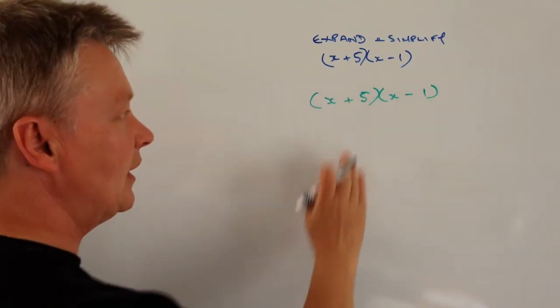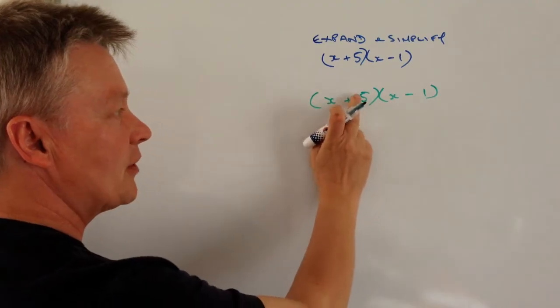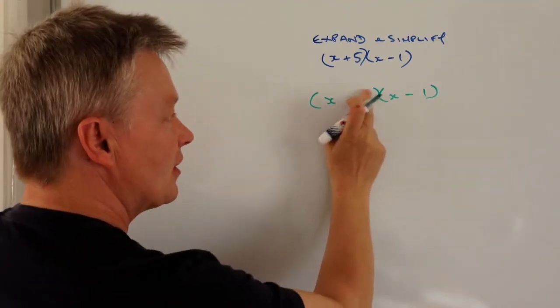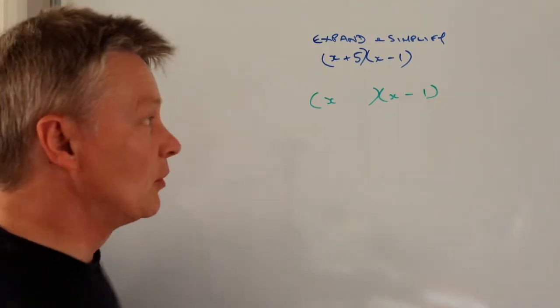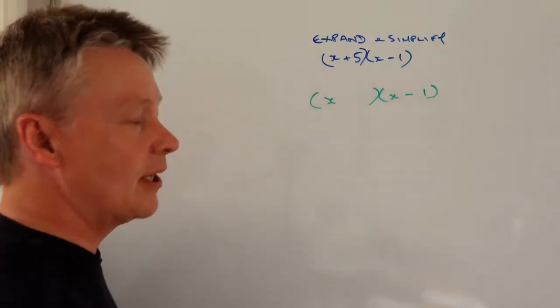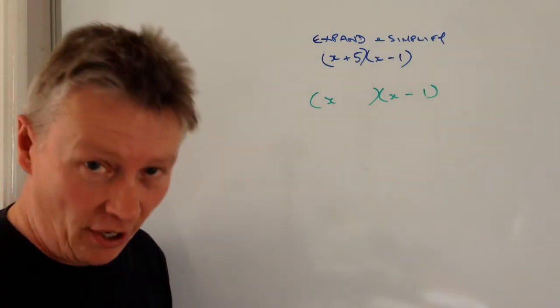For the moment, just completely ignore the plus 5 bit. In fact, we'll take that out. What we're going to do then is multiply each of these two terms inside the bracket by the X.